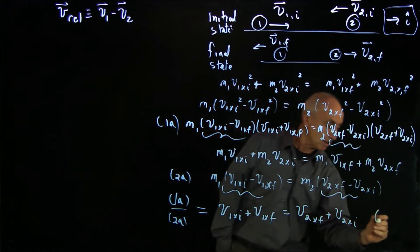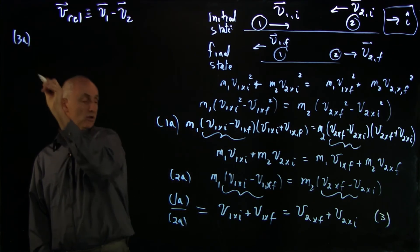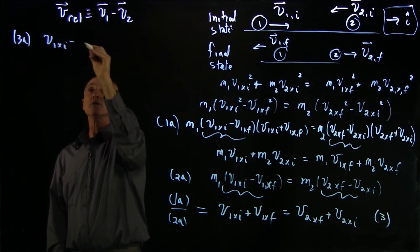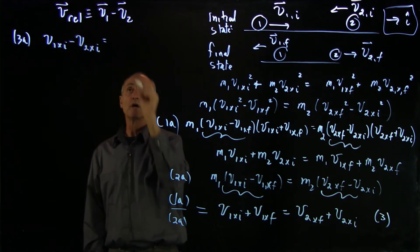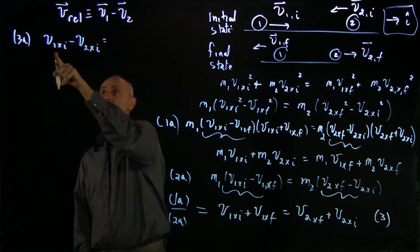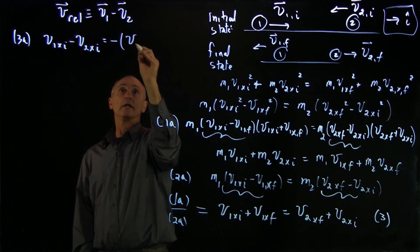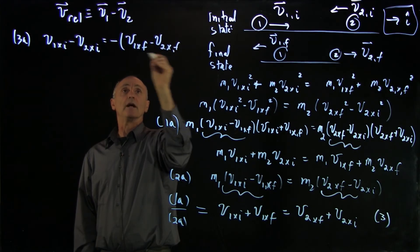And so this equation, which will give it a number 3, and now we'll modify that by calling it 3a, we have v1x initial minus v2x initial. Now notice the sign. I'm going to want to keep the order of 1 and 2, so I have to put a minus sign: v1x final minus v2x final.